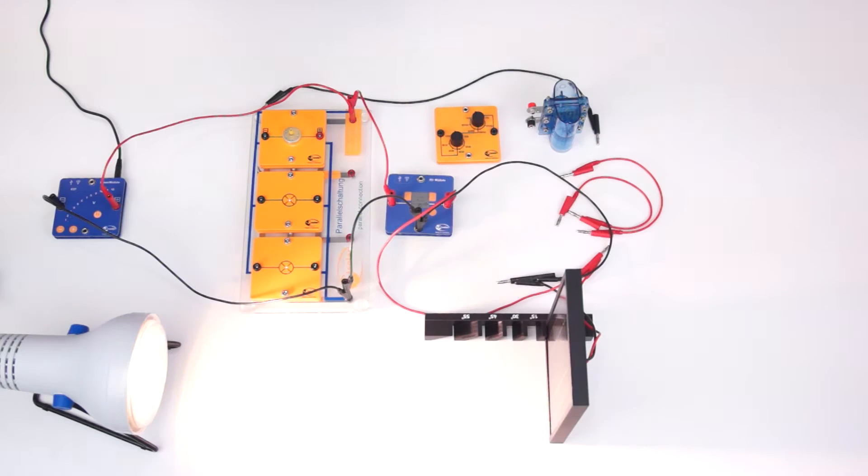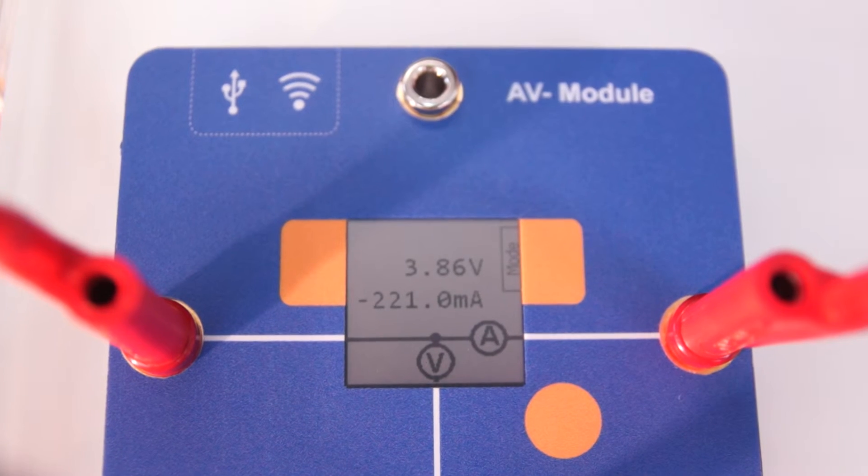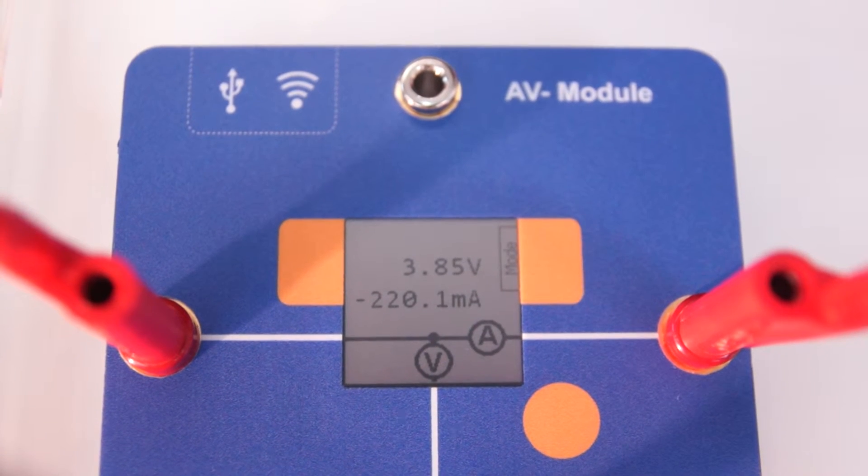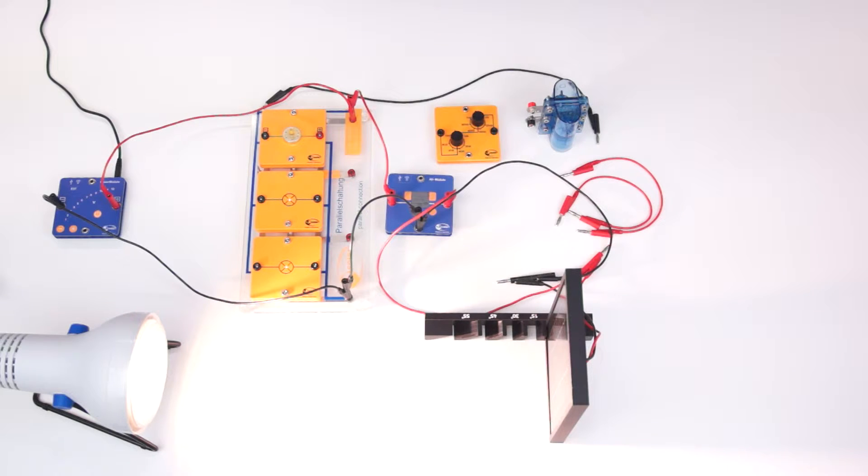We also turn on the lamp. We recognize that the voltage changes and it now amounts to 3.83 volts. This is an exceedance of the maximum allowable value of 3.3 volts.